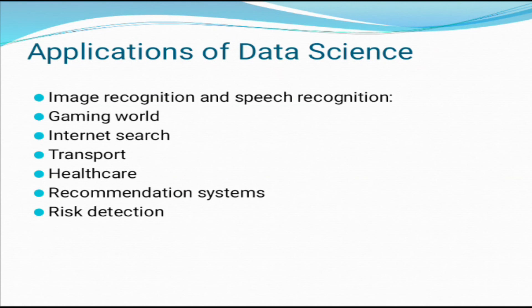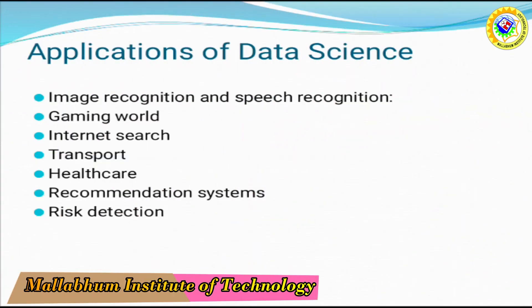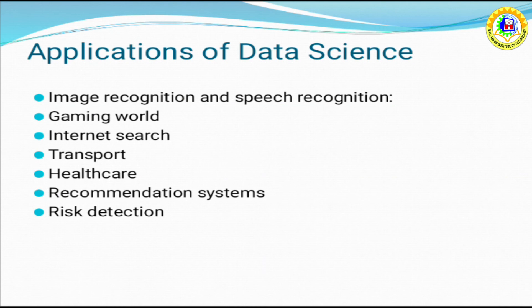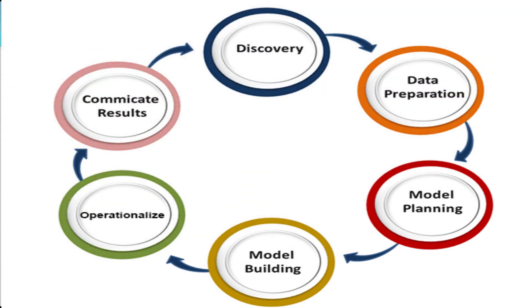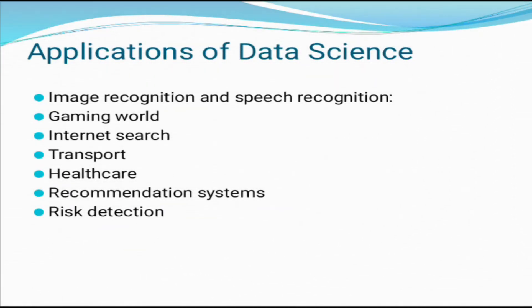Now we will see some examples and scenarios where data science is used: image recognition and speech recognition, gaming world, internet search, transport, healthcare, recommendation systems, and risk detection. In risk detection, finance industries always had an issue of fraud and risk of loss. But with the help of data science, this can be resolved. Most finance companies are looking for data scientists to avoid risk and any type of loss, while increasing customer satisfaction.